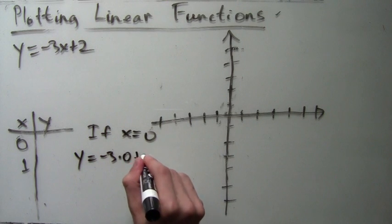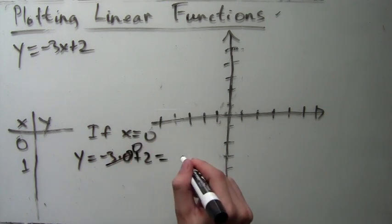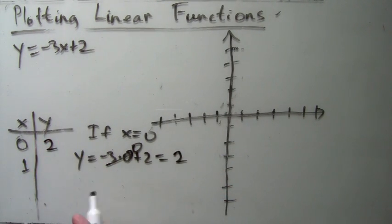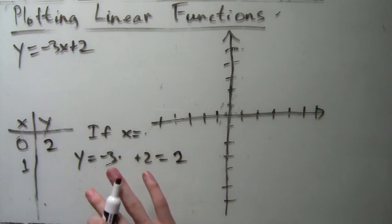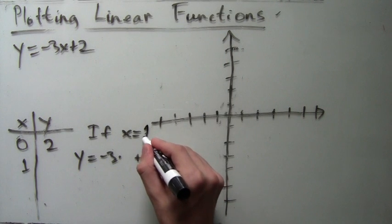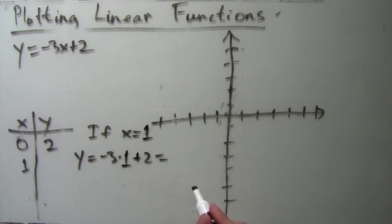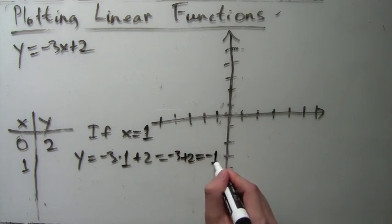If x equals 0, then y equals just 2. Next, if x equals 1, then we get -3 times 1 plus 2, which is just -3 plus 2, which is just -1.